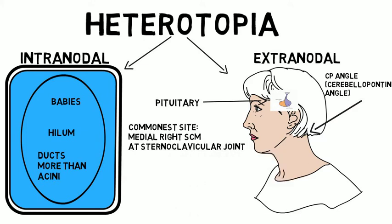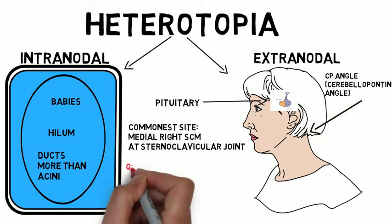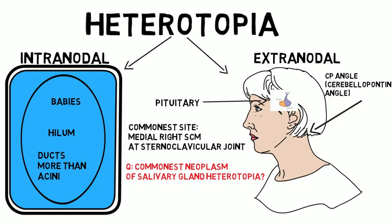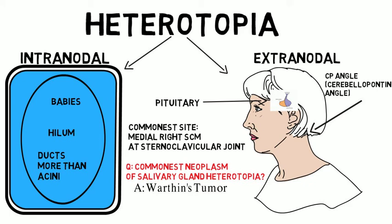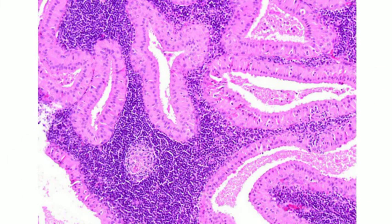Here's a question: what is the commonest neoplasm of salivary gland heterotopia? The answer is the Warthin's tumor. We'll cover this in more detail in neoplastic salivary gland, but here's a sketch of a Warthin's tumor. Note that it consists of a bilayer of epithelium overlying abundant lymphoid tissue. That epithelium, especially the superficial layer, is columnar, and there's reversal of the nuclear polarity with nuclei toward the apical end — very characteristic of a Warthin's tumor.